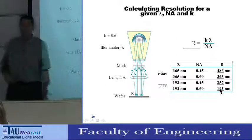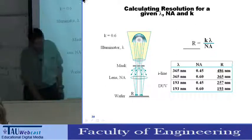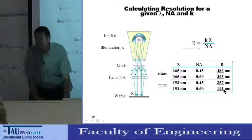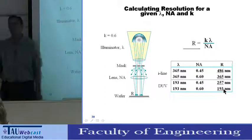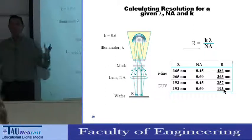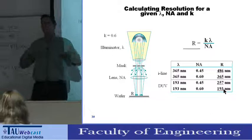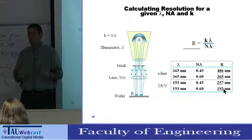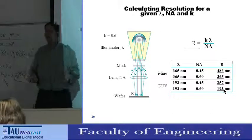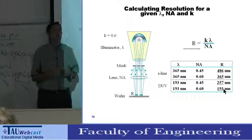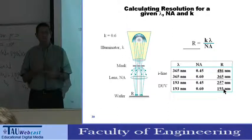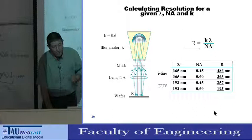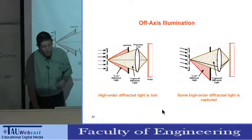However, we know that 193 nanometers is much bigger than what we can produce today. Actually, we produce today 45 nanometers. So I will tell you how we actually overcome the problem and how we make the resolution better.